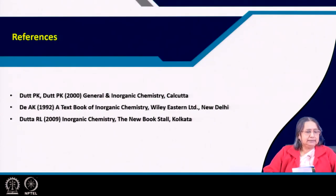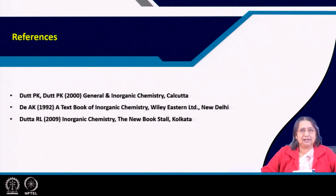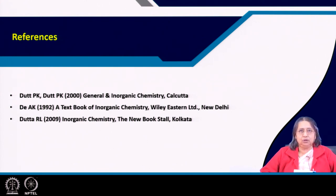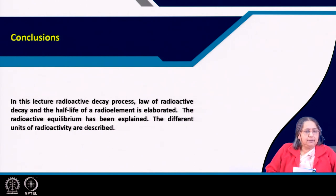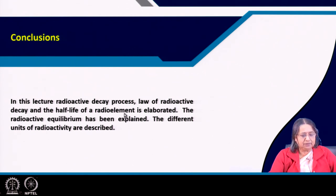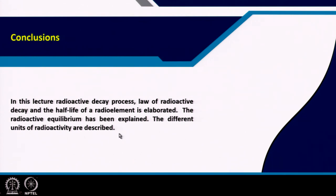The references are the same 3 books used throughout this module — you can read from these books if you want to learn more. In this lecture, the radioactive decay process, the law of radioactive decay, and the half-life of the radio element have been elaborated; radioactive equilibrium has been explained; and different units of radioactivity have been described. Thank you.